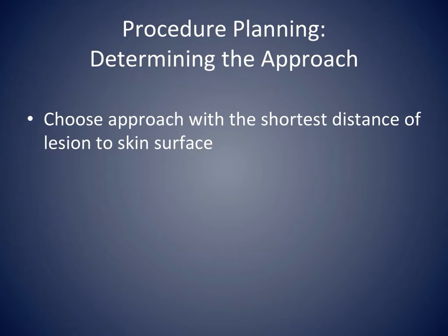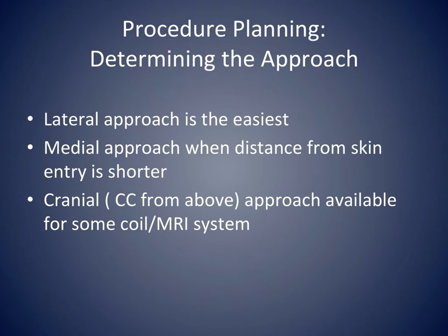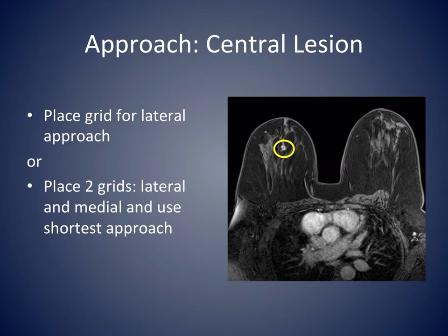Several concepts are taken into consideration when determining the approach to biopsy a lesion. The main principle is to use the approach with the shortest distance between the lesion and the skin surface. The lateral approach is the easiest and therefore preferred. When the lesion is closer to the medial side of the breast, a medial approach may be considered if possible. A cranial or superior approach may be available in some coil and MRI scanner configurations. For a central lesion, we can place a single grid and plan a lateral approach, or place two grids—one lateral and one medial—and use the approach with the shortest distance from the skin.